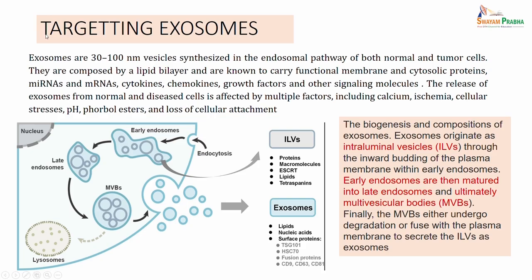The other aspect is targeting the exosomes. What are these exosomes? The exosomes are 30 to 100 nm vesicles which are synthesized in the endosomal pathway, and this happens in both normal and tumor cells. These exosomes are composed of a lipid bilayer and they can carry functional membrane and cytosolic proteins, miRNAs, mRNAs, cytokines, chemokines, growth factors - all these can be carried in these exosomes. The release of exosomes from normal and diseased cells is affected by multiple factors including calcium, ischemia, cellular stress, pH, formal esters and loss of cellular attachment.